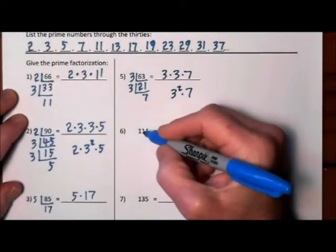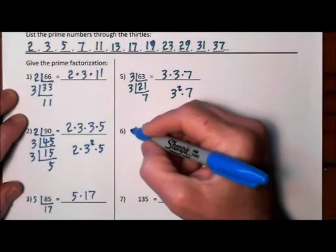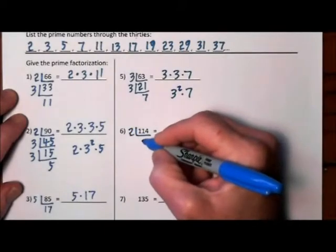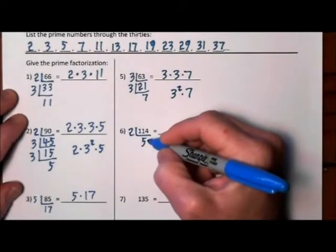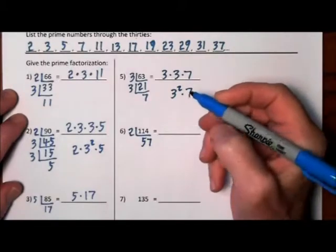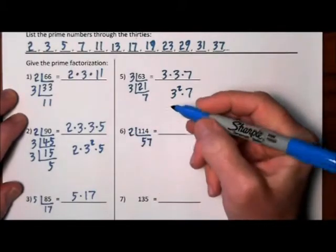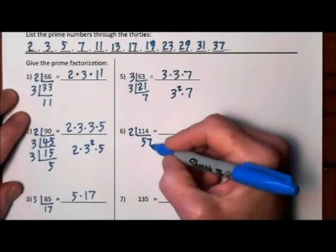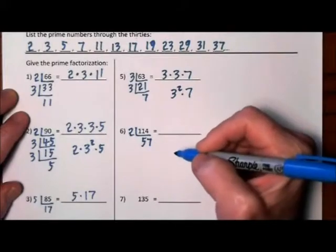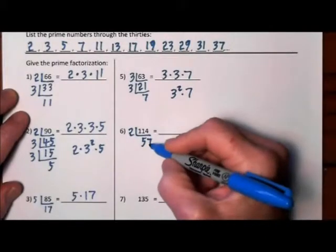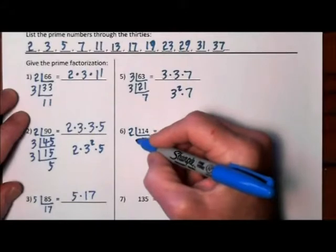Looking at our next one, 114. 2 will go into that. 2 goes into 114, 57 times. Will 2 go into 57? No. Will 3? 5 and 7 is 12, so 3 will work.